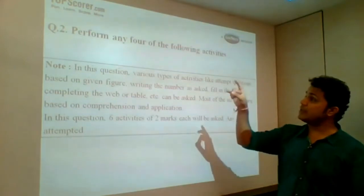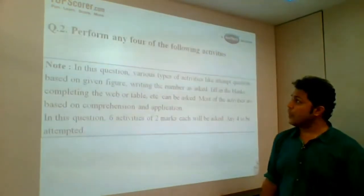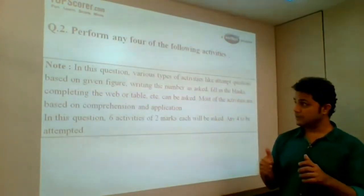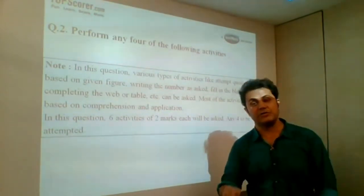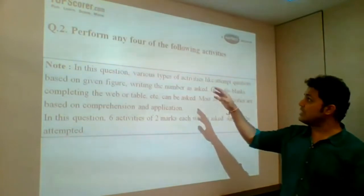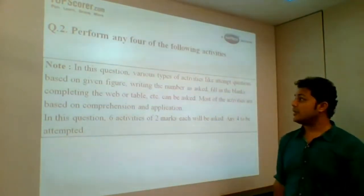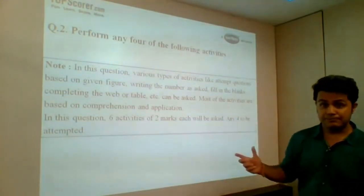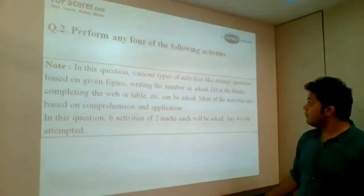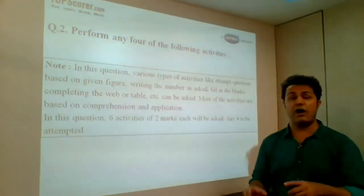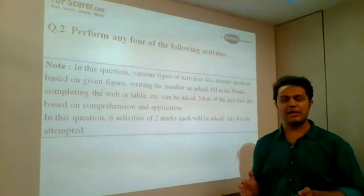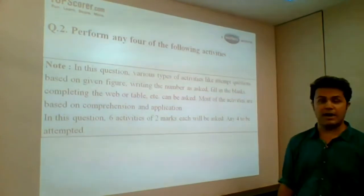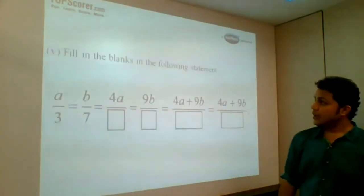Now question number 2 is perform any 4 of the following activities. So they are going to give you all together certain activities. There will be 6 activities out of which you need to solve 4. In this question, various type of activities like attempt questions based on the given figure, writing the number as asked, fill in the blanks again, completing the web or table, etc. can come. Most of the activities are based on comprehension and application of the concept. It would be direct application. 6 activities are given, you need to attempt any 4, each for 2 marks, so total weightage would be 8 marks.